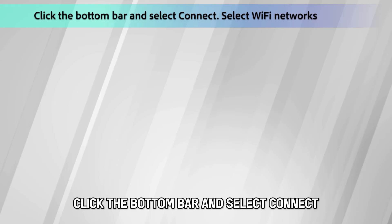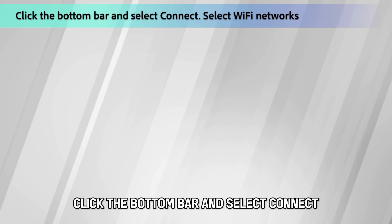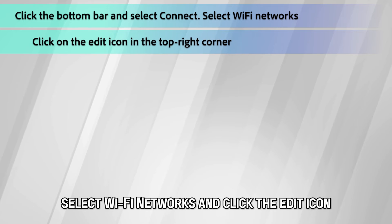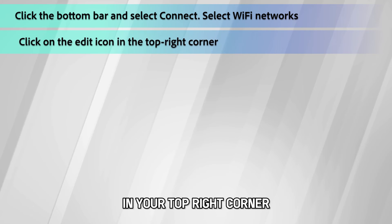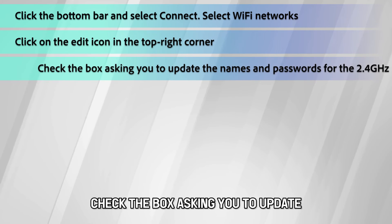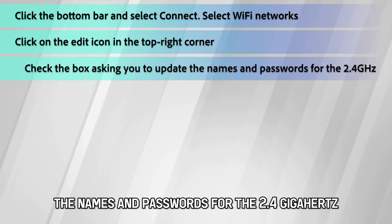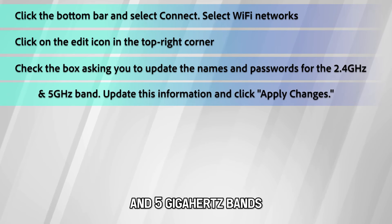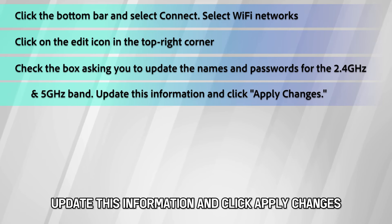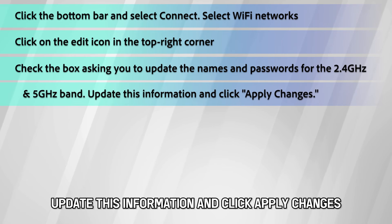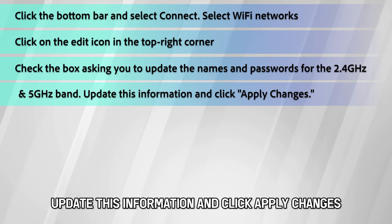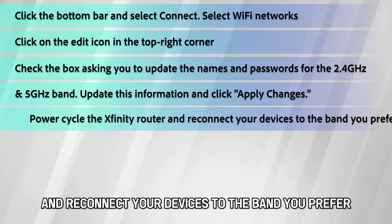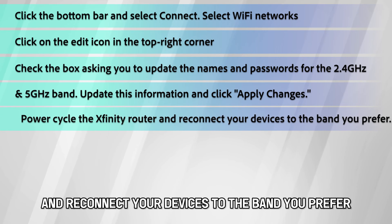If you have the Xfinity app, click the bottom bar and select Connect. Select Wi-Fi networks and click the Edit icon in your top right corner. Check the box asking you to update the names and passwords for the 2.4 GHz and 5 GHz bands. Update this information and click Apply Changes.